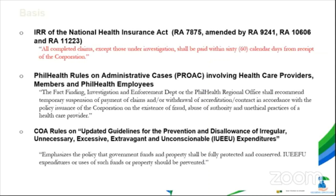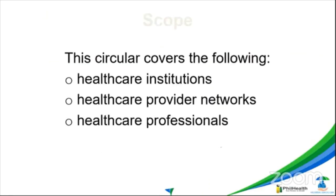Third, the COA rules on updated guidelines for the prevention and disallowance of irregular, unnecessary, excessive, extravagant, and censurable expenditures, which emphasizes the policy that government funds and property shall be fully protected and conserved. Such expenditures or use of such funds or property should be prevented. Your Honor, the circular covers all healthcare institutions, healthcare provider networks, and healthcare professionals.